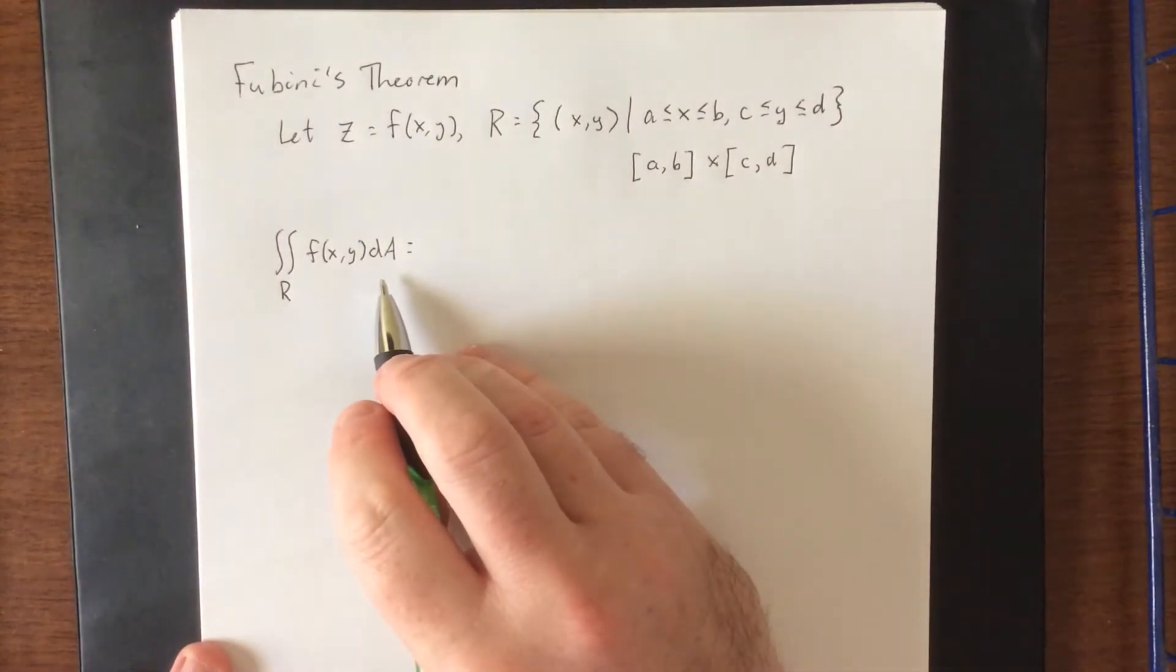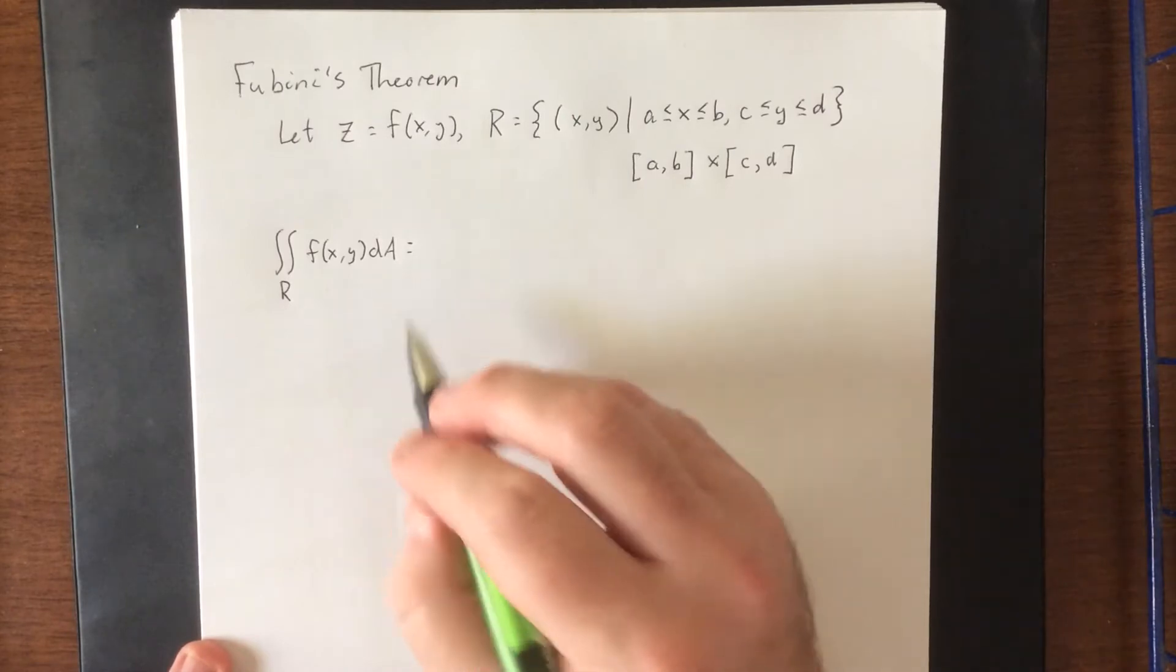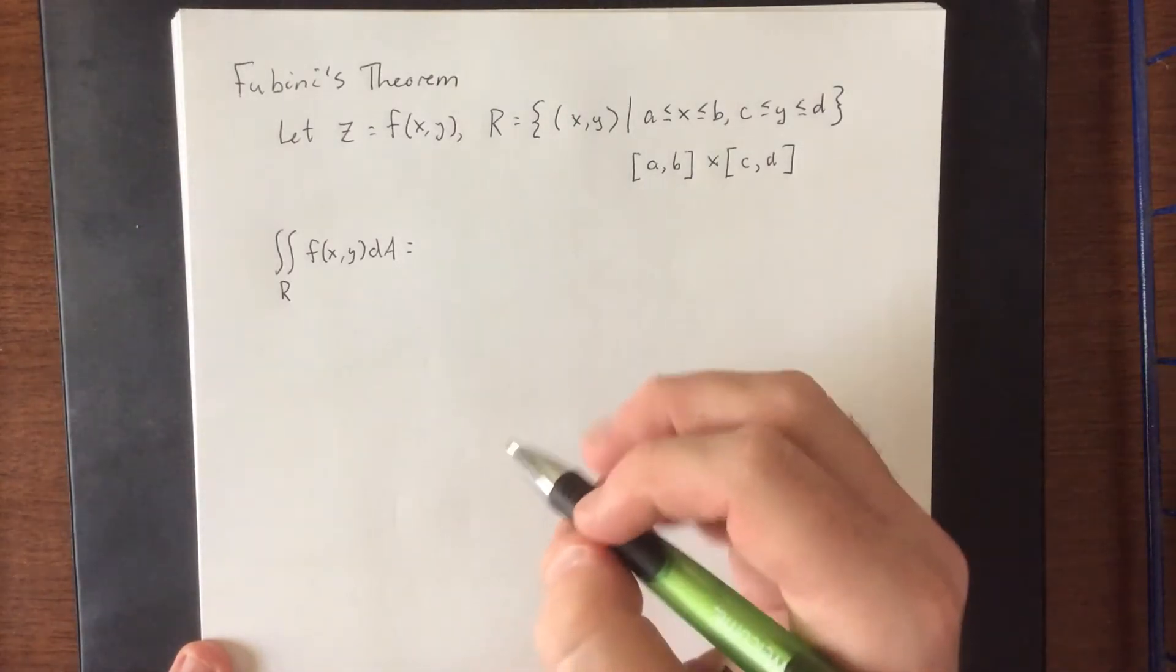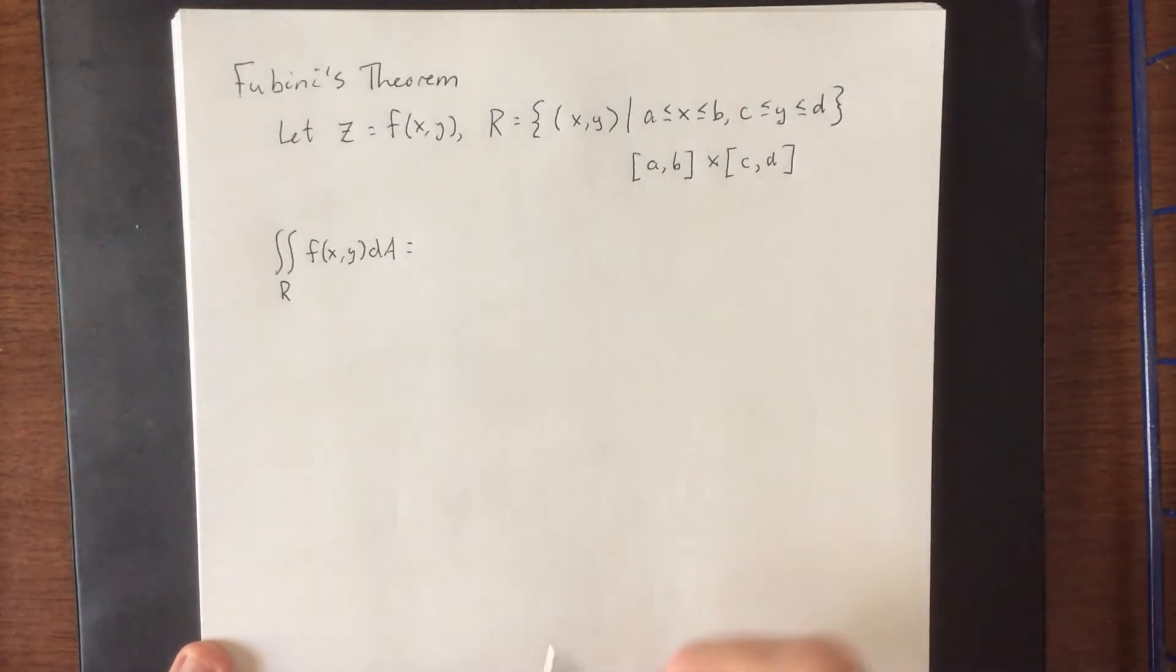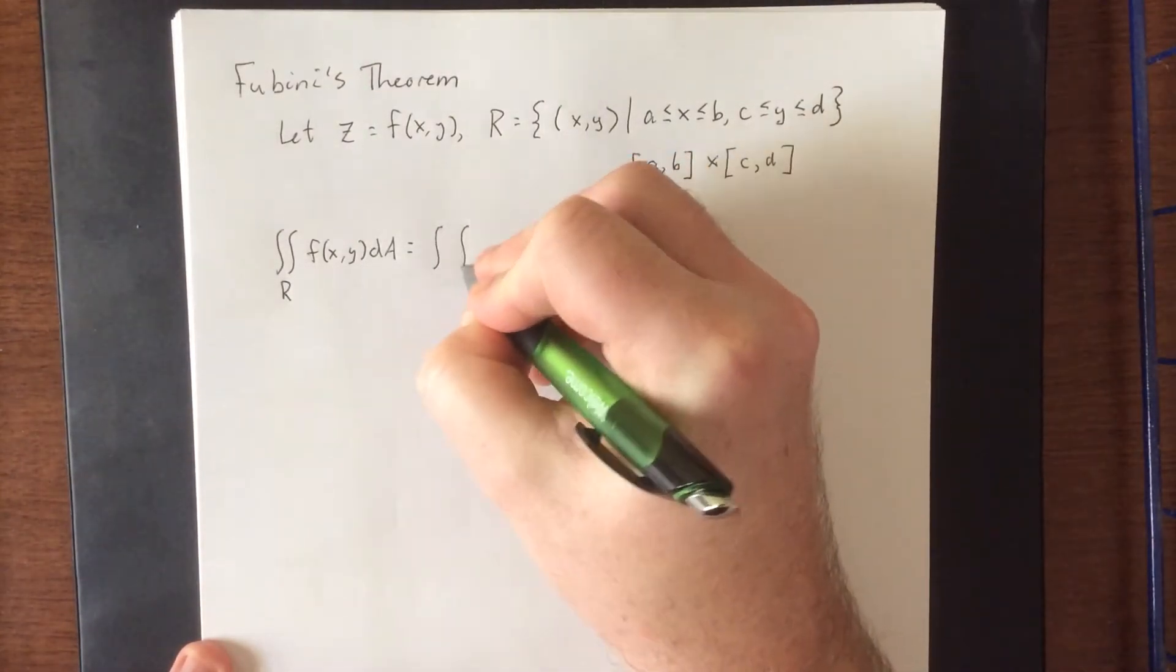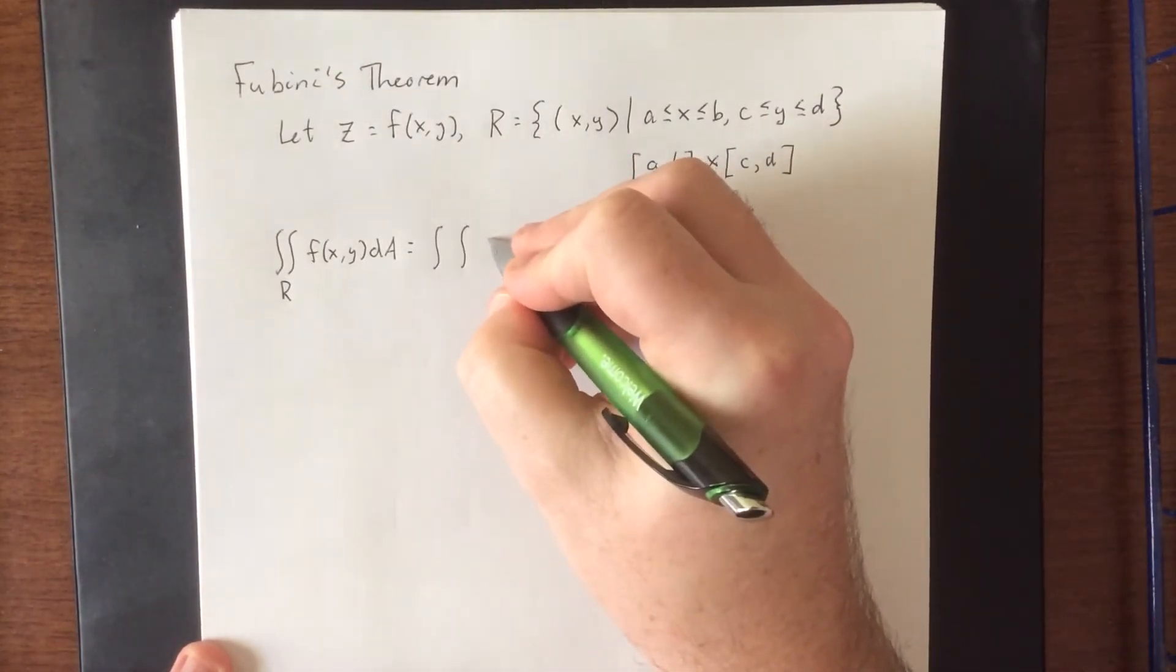Keep in mind that the way we created ΔA is we multiplied Δx times Δy. When they become infinitesimal, they become dx and dy. Fubini's theorem states that you can set this up as a pair of iterated integrals.